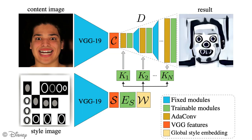In the context of neural style transfer, AdaIn transforms the mean and standard deviation of content features so as to match the corresponding global statistics of an input style image. This is equivalent to using the style features to emphasize or suppress the convolutional kernels used to decode the content image. This convolutional effect is global and does not capture local style structure.